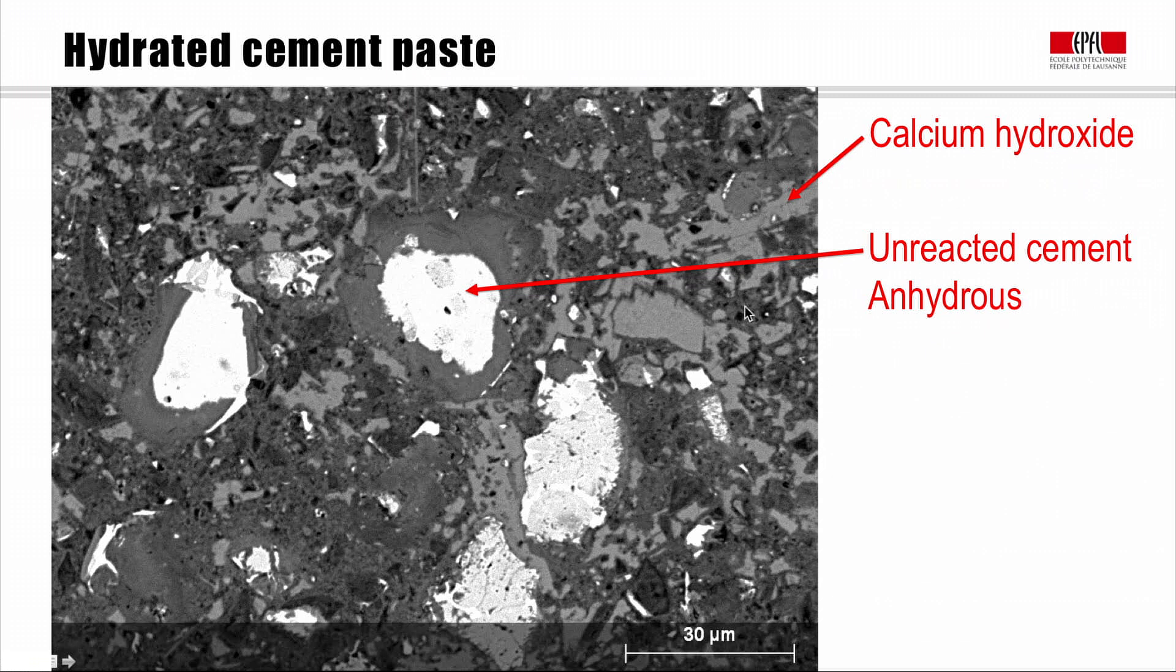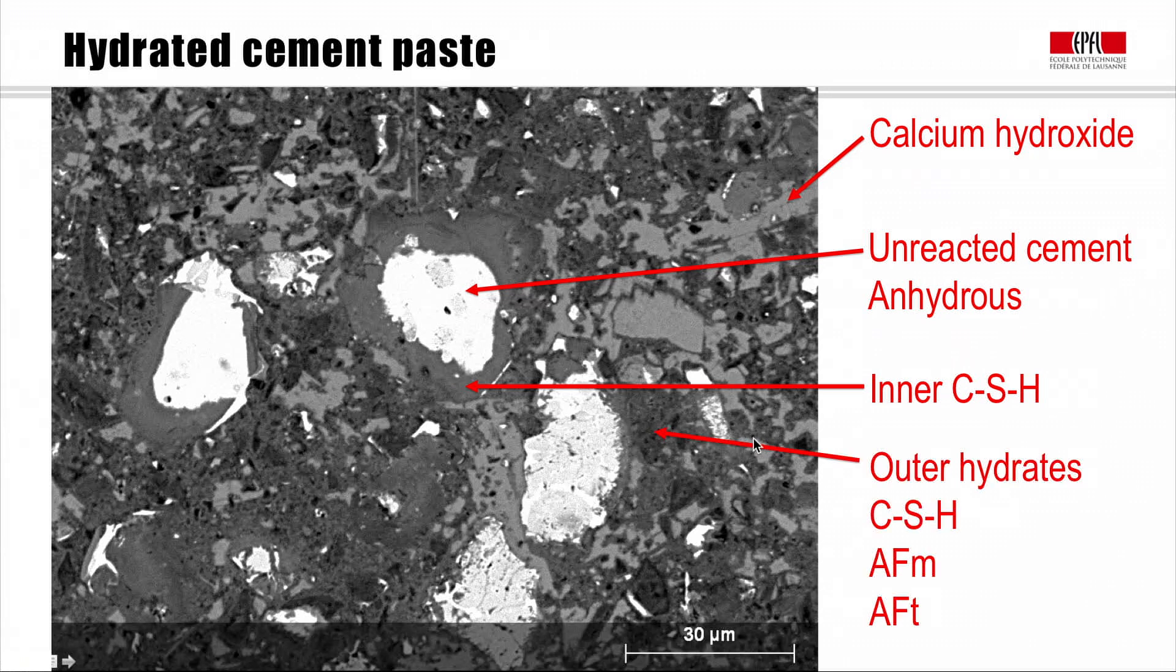And then, apart from the calcium hydroxide, the rest of the hydrates have these kind of darker gray levels. We can still see that they're lighter than the pores, which we can see in black, such as here. And these other hydrates, we can say it's in majority CSH. Around the cement grains, we can see these nice rims. We call these rims have formed in the place of the cement grain, which has reacted. And this is called inner CSH. Whereas now between the grains, we have what we call outer hydrates. And this is a very fine mixture of CSH, of AFM and of AFT phases, which we can't distinguish from each other at this level of resolution here.